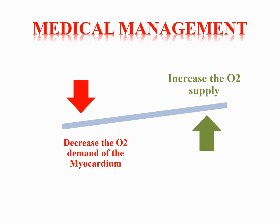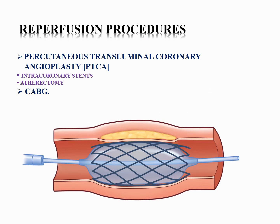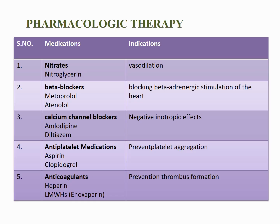The objectives of medical management of angina are to decrease the oxygen demand of the myocardium and increase the oxygen supply. Alternatively, a reperfusion procedure such as PTCA or CABG may be used to restore blood supply to the heart. Pharmacologically, the first medication is nitroglycerin, a vasoactive agent that dilates primarily the veins and, in higher doses, the arteries. It is administered to reduce myocardial oxygen consumption, decrease ischemia, and relieve pain. Sublingual nitroglycerin ideally alleviates the pain of ischemia within 3 minutes.